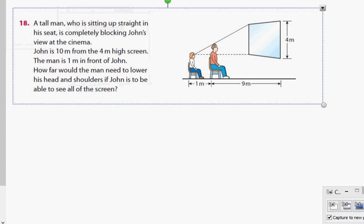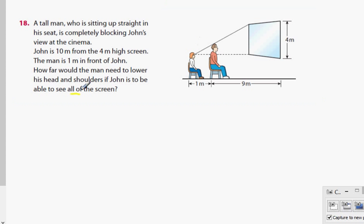This one here. A tall man who is sitting straight in a seat is completely blocking John's view at the cinema. John is 10 meters from the 4 meter high screen. The man is 1 meter in front of John. How far would the man need to lower his head and shoulders so John can see the screen directly. See all of the screen.